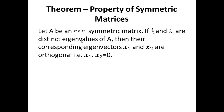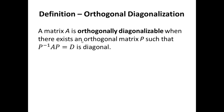Let's define orthogonal diagonalization. A matrix A is orthogonally diagonalizable if there exists an orthogonal matrix P such that P inverse times A times P equals a diagonal matrix D. So we have diagonalized A, but by using an orthogonal matrix P — we say A has been orthogonally diagonalized.